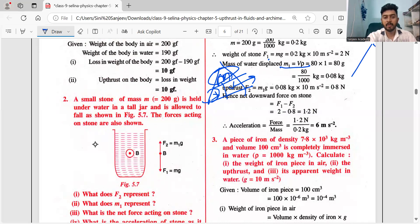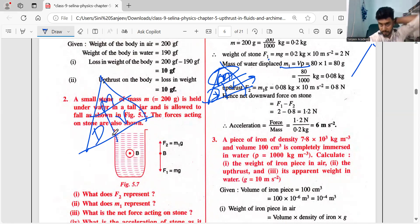Always write in SI unit which is kilogram. How to convert gram to kilogram? Divided by 1000. Then the Uptrust - F2 is equal to M1 into g. Once you calculated the mass, just multiply. So 0.8 Newton.